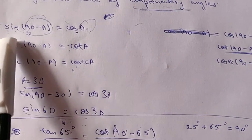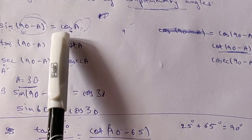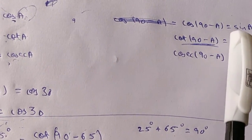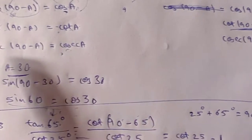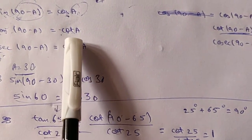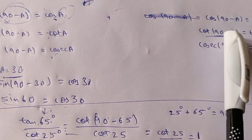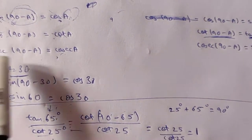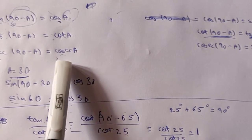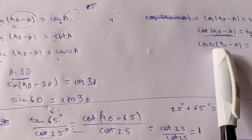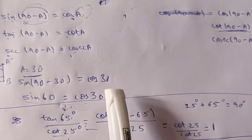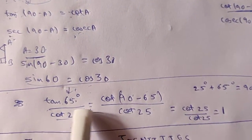You need to learn these six properties: sin(90° − a) = cos a, cos(90° − a) = sin a, tan(90° − a) = cot a, cot(90° − a) = tan a, sec(90° − a) = cosec a, and cosec(90° − a) = sec a. These properties are important for solving questions.